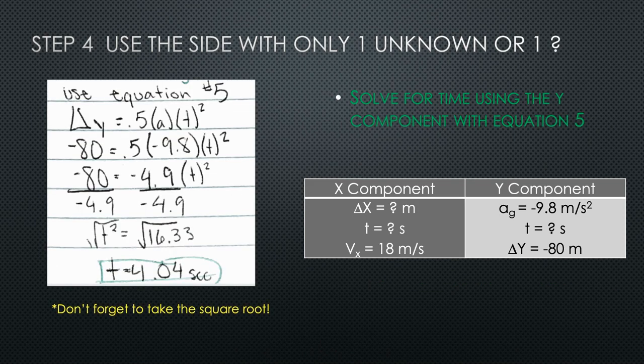For Y component, you will use the shortened version of equation 5. Pay close attention to signs and don't forget to take the square root. Also, as I've mentioned in previous lessons, time cannot be negative. In fact, you can't take the square root of a negative, so that should serve as your clue if you forgot to have delta Y as a negative number.